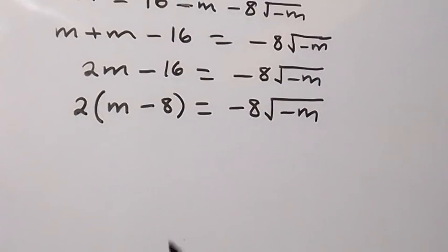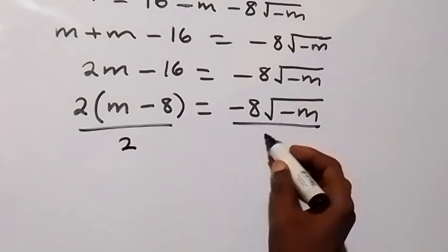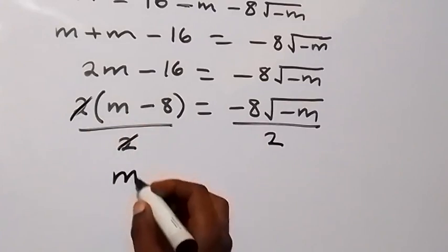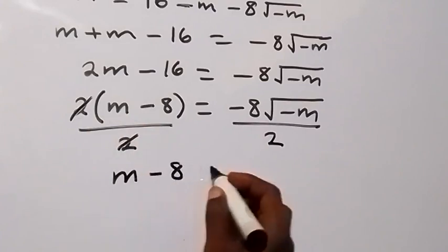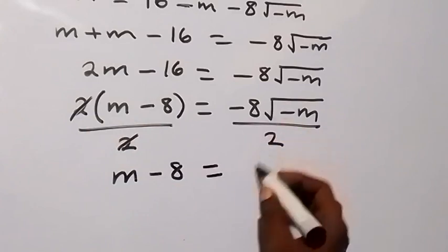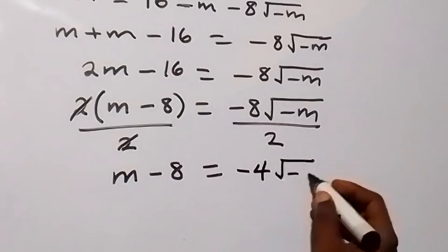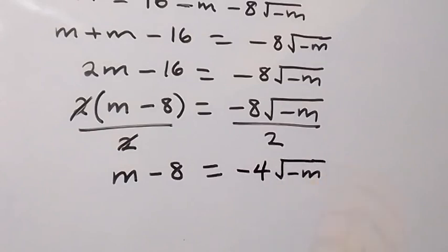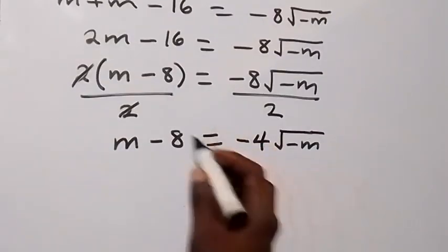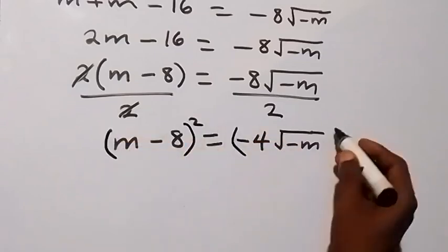Let's divide both sides by 2, so we get m - 8 = -4√(-m). Now in the next step we square both sides again to eliminate the remaining square root.